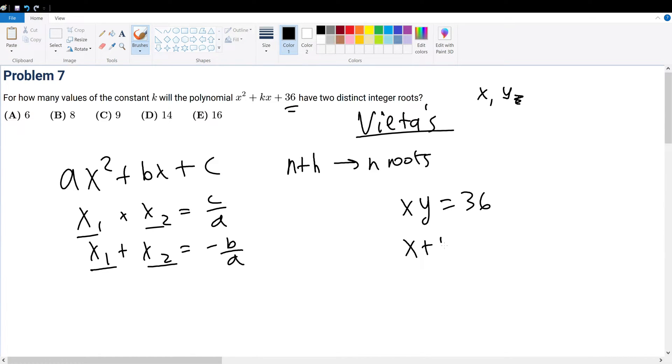Now, what is x plus y? Well, x plus y is negative b over a, which is negative k over 1. Now, x and y right here are roots of, or rather, factors of 36.